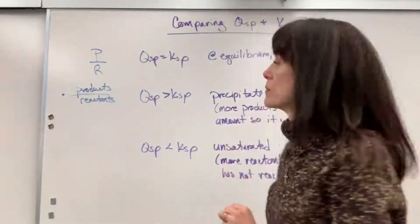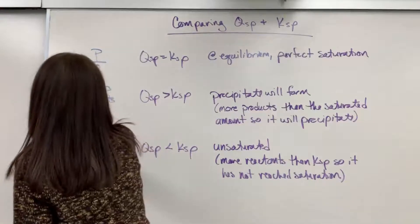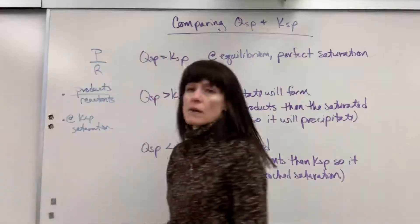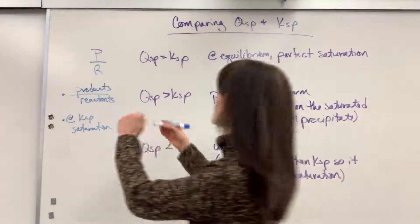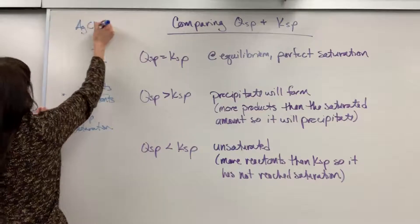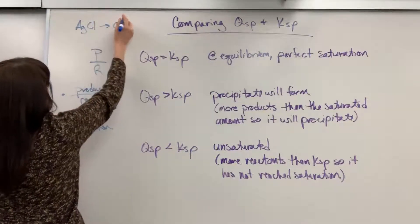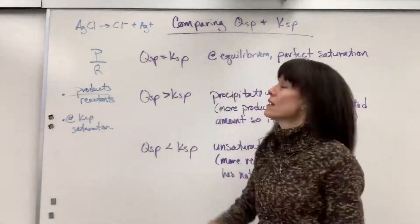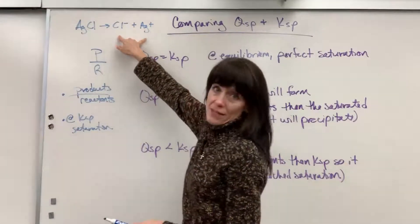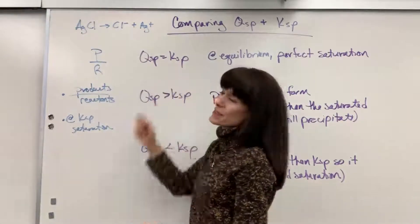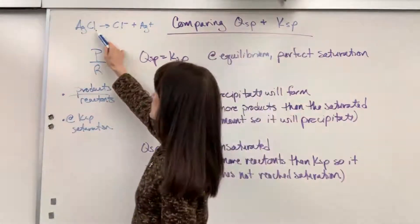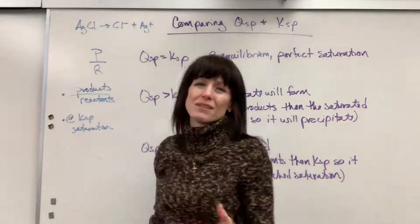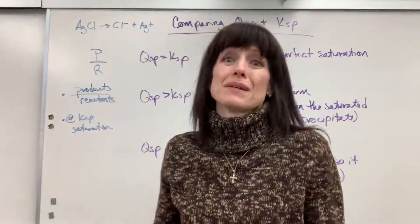So that's the first thing that I want to keep in your mind. Second thing that I want you to remember is that at KSP, that's when we have saturation. So you have a solid. Let's take silver chloride as an example and it's going to produce a chloride ion and a silver ion. When we're at KSP, the maximum amount of ions have dissolved. Because remember, for all intent and purpose, these KSP values come from compounds that really are insoluble.